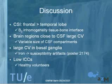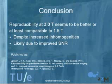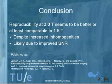Furthermore, especially for spectroscopy, we saw low intraclass correlations. However, we are studying a healthy volunteer group, and due to the homogeneity within the population, the ICCs obtained are typically low. Our conclusion is that reproducibility at 3 Tesla seems to be better or at least comparable to reproducibility studies at 1.5 Tesla. This is probably due to the improved signal-to-noise ratio, and the increased inhomogeneities apparently don't have that large an effect. This work has now been published in the latest issue of Investigative Radiology.